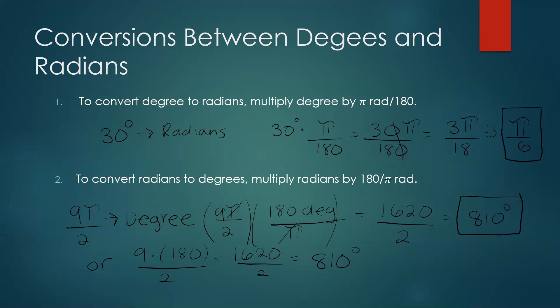To convert radians to degrees, multiply the radians by 180 over pi. For example, if you had 9 pi over 2 and want to convert to degrees, multiply 9 pi over 2 by 180 over pi. The pi cancels, leaving 9 times 180 on the numerator, which is 1620, divided by 2, giving 810 degrees. A simpler way: just replace pi with 180. So 9 times 180 over 2 equals 810 degrees.